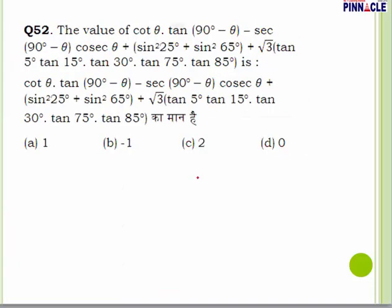Question number 52: find the value of cot theta · tan(90° − theta) − sec(90° − theta)·cos theta + sin²25° + sin²65° + √3·tan5°·tan15°·tan30°·tan75°·tan85°. The statement is quite lengthy but the question is not difficult. You need carefulness — you have to be careful otherwise you can put the wrong value. Let's put the value of theta = 45°.